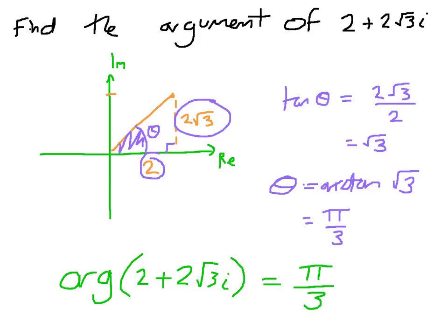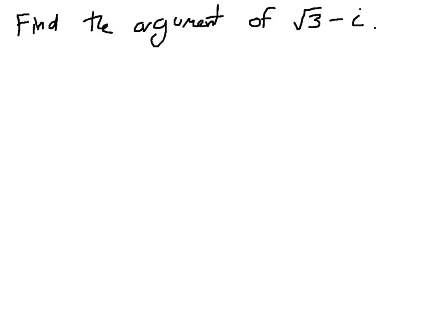Finding the argument is as straightforward as trigonometry, but let me show you two examples that might catch you out. So again, we just launch in, find the argument, and we're given a number here. We go straight to the Argan diagram. The scales are relevant. I'm just putting a number here. What's important is that the real component is root 3, and the imaginary component is minus i, so this has a length of 1.